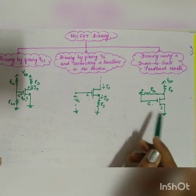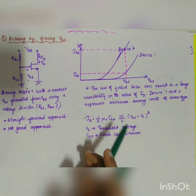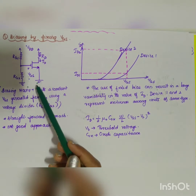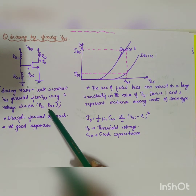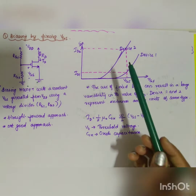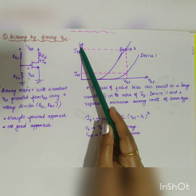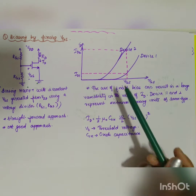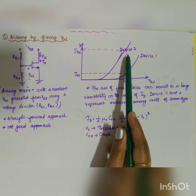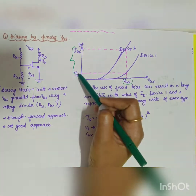Moving on to the first type — biasing by fixing VGS — the key point is that a constant VGS is generated from VDD using voltage divider biasing RG1 and RG2. It is a straightforward approach, but not a good one. Looking at the characteristic graph of drain current ID versus VGS, if two devices are used, a particular VGS produces a large variation in ID.